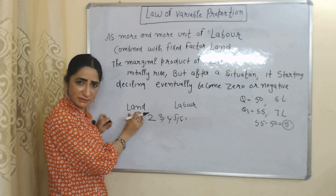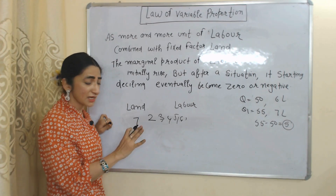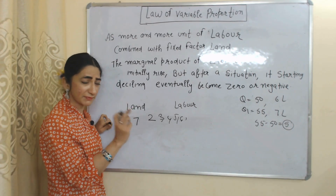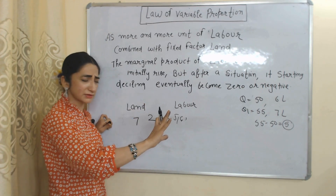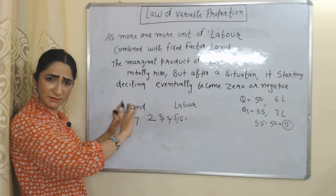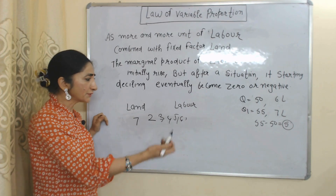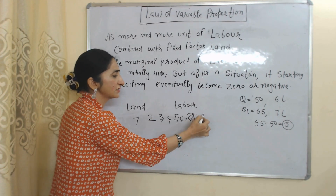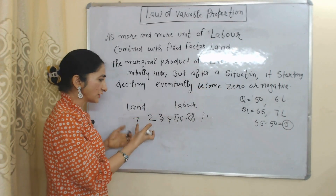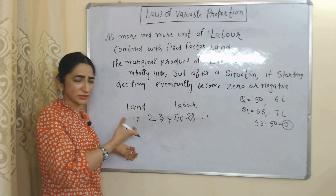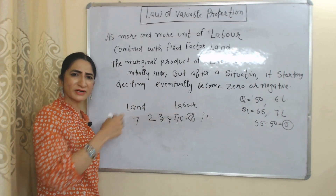But after hiring the 7th laborer, this land has no remaining capacity, because we needed only 7 laborers for full utilization of this land. After the 7th laborer, the land is completely utilized. But we are still hiring the 8th, 9th, 10th, 11th, 12th laborer. Obviously, our output will reduce. Eventually, marginal product of labor will decline and become zero or negative.